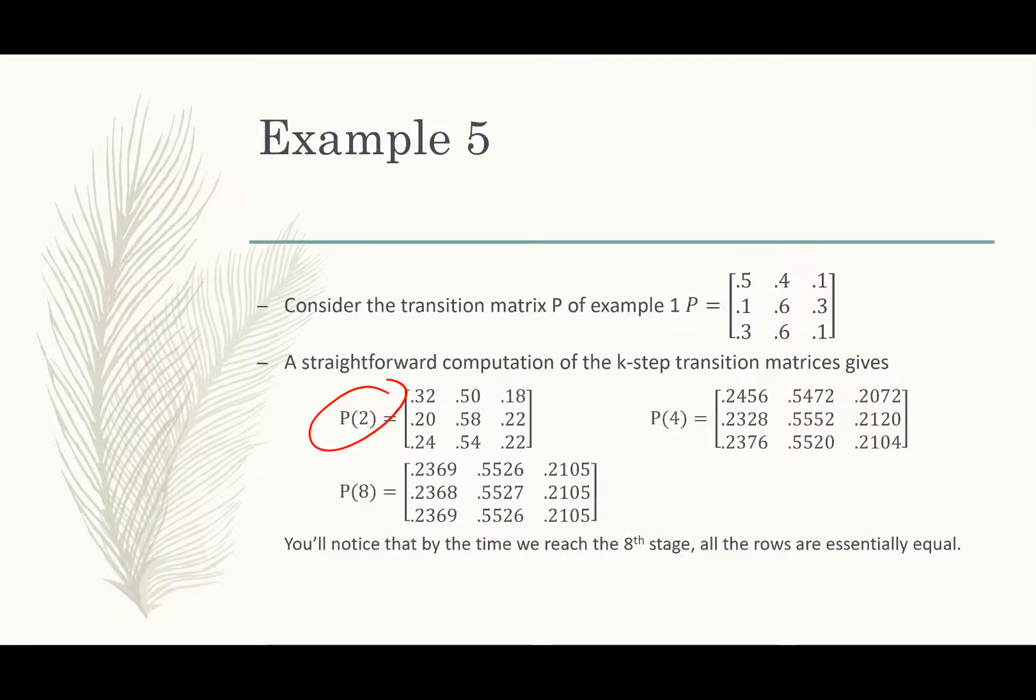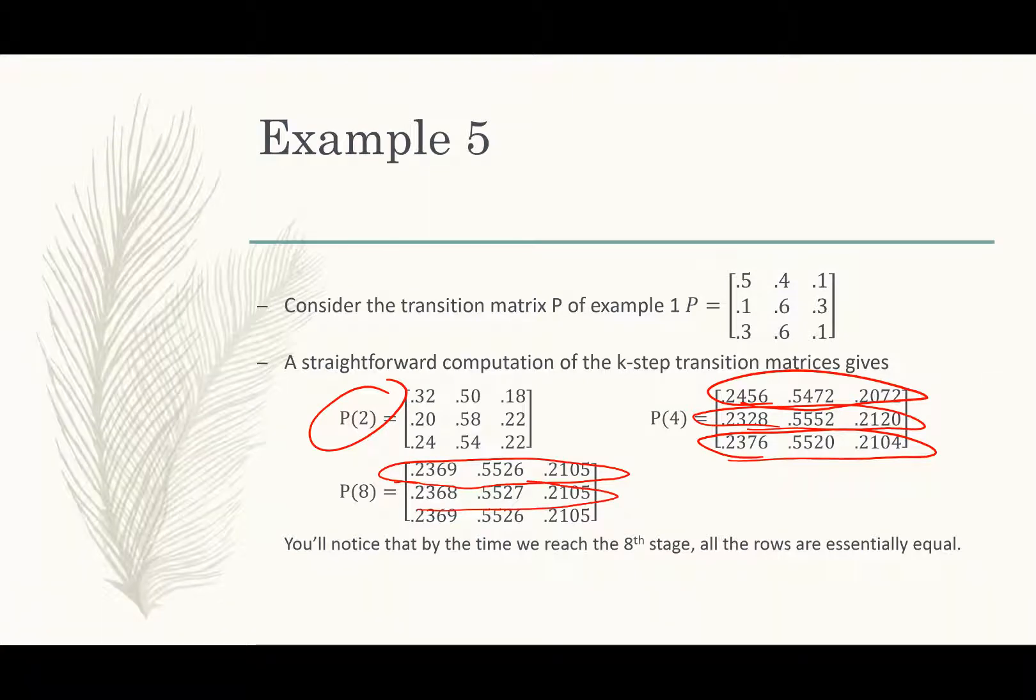So remember P2 is the transition matrix to the second power. P4 is transition matrix to the fourth power. P8 is transition matrix to the eighth power. The more transitions you look at later on, like the eighth transition and so on, the higher the power you raise it to, you'll notice that the rows get more and more alike until at some point each row is basically identical to each other.